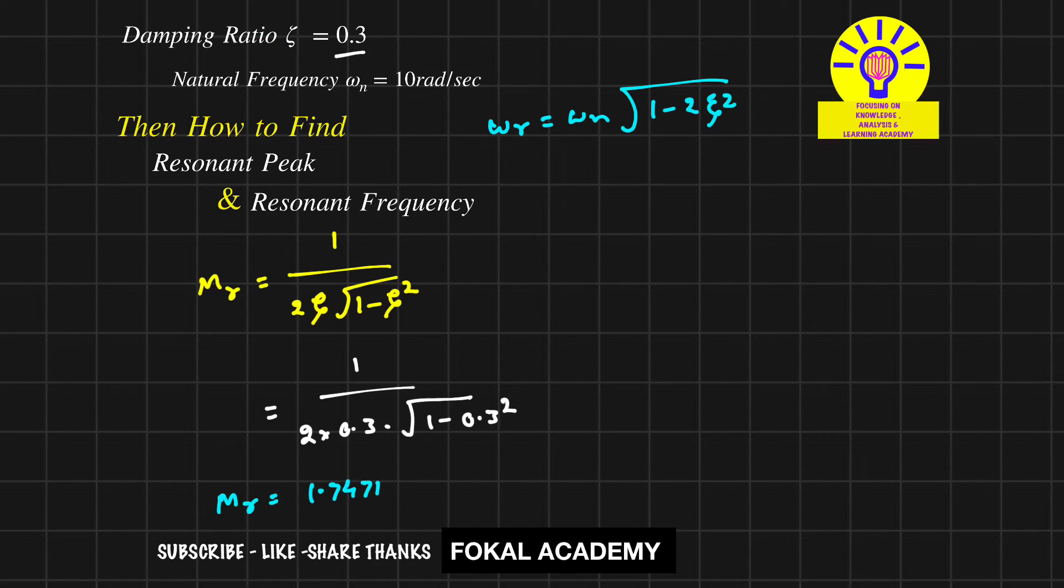Now substitute damping ratio and natural frequency in this equation. Then we get resonant frequency. So that is equal to 10 into root of 1 minus 2 into 0.3 square. So by simplifying this, we'll get 9.055 radians per second.